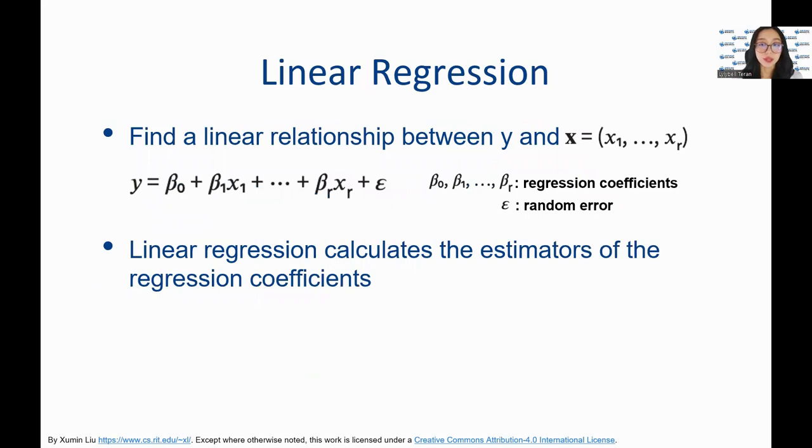x1 to xr are the features of the data objects. Beta sub 0 is the intercept and beta sub 1 through beta sub r are the coefficients of the features. Epsilon is the random error, which is usually modeled as a zero-mean Gaussian distribution. During the regression learning, the values of the intercept and the coefficient are learned as an optimization problem so that the learned model fits the data the best.